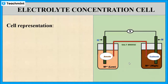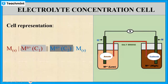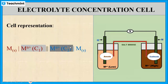Now let us see the cell representation. The metal with the lower concentration of the electrolyte, C1, should be written on the left-hand side, and the electrode with the higher concentration, C2, should be written on the right-hand side. This is the cell representation of the concentration cell.